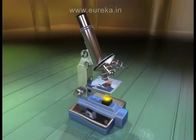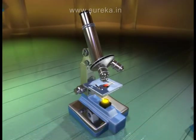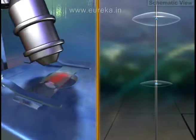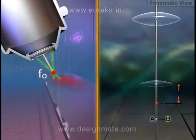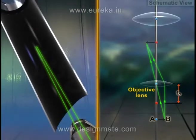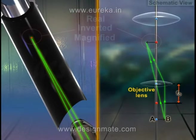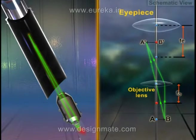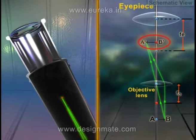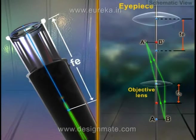Let us see how all these parts work together to give us the final image. Let AB be an object placed just outside the focal length FO of the objective lens. Here we can see a real, inverted and magnified image A'B' produced on the other side of the objective lens. The separation between the objective lens and the eyepiece is adjusted in such a way that image A'B' falls within the focal length FE of the eyepiece. This image A'B' acts as an object for the eyepiece.